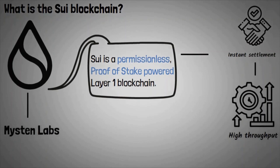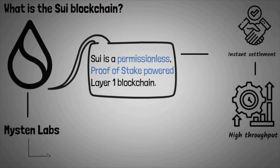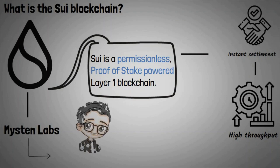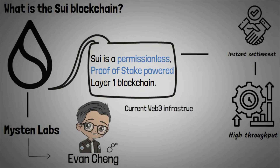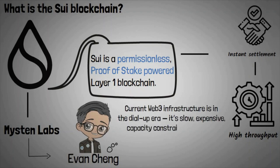The Sway blockchain is the brainchild of Mission Labs, an R&D company founded by former senior executives at Meta's Novi Research, and lead architects of the DM blockchain and Move programming language. According to Evan Cheng, co-founder and CEO at Mission, current Web3 infrastructure is in the dial-up era — it's slow, expensive, capacity-constrained, insecure, and simply hard to build for.